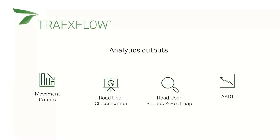I wanted to start by outlining what type of analytics outputs Traffic Flow includes. It includes traffic movement counts most importantly, but also road user classification, road user speeds and heat maps, and also a calculated annual average daily traffic figure. Let's take a look at these one by one in a bit more detail.